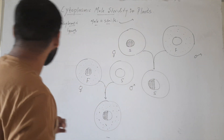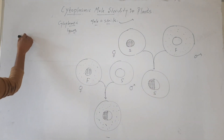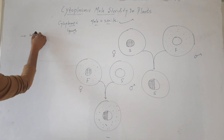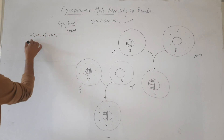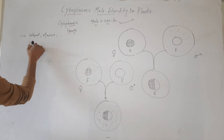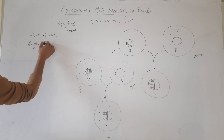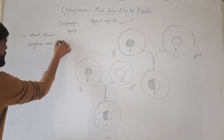Cytoplasmic male sterility is found in many plants like wheat, maize, sorghum, and cotton.